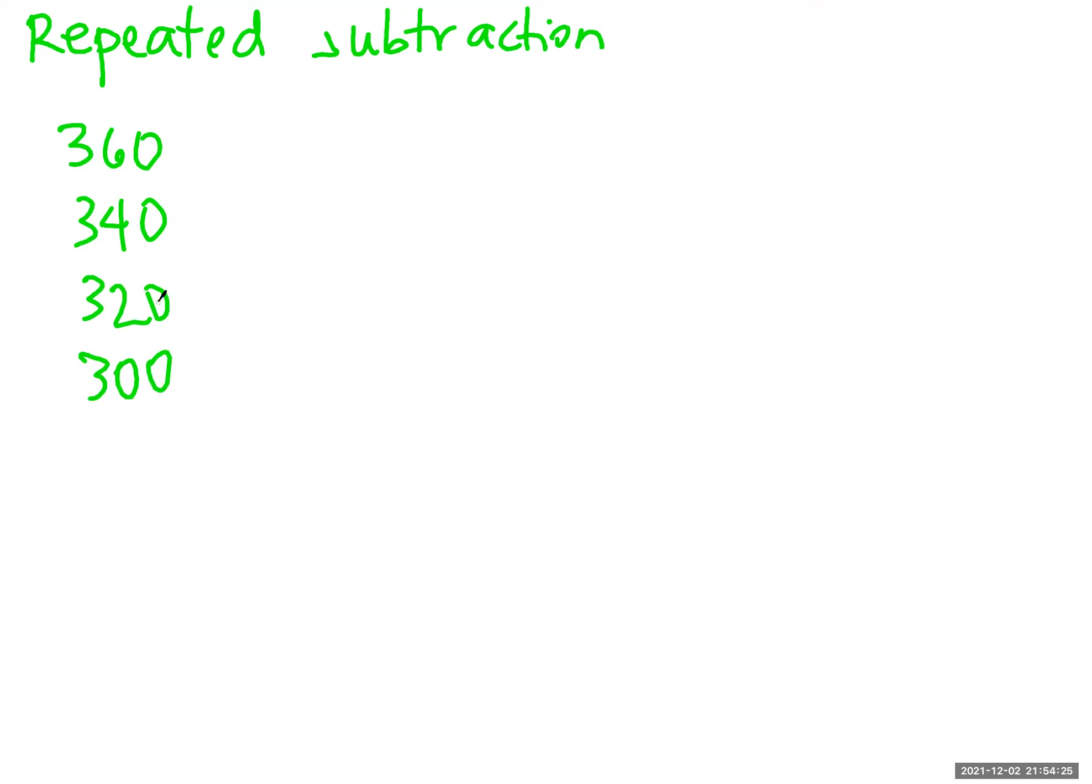I can do this a little bit more efficiently than that too, right? I'm really asking how many 20s can I take from 360? I can write it out like I was doing before, or I could do it and make it look a little bit more like a division problem.